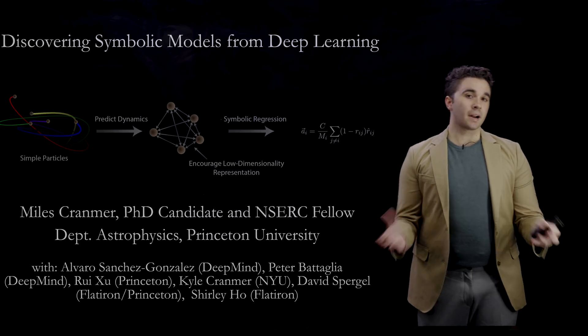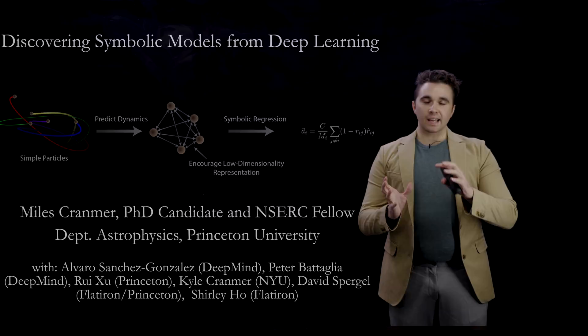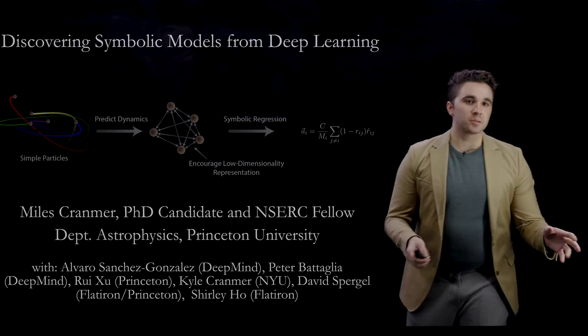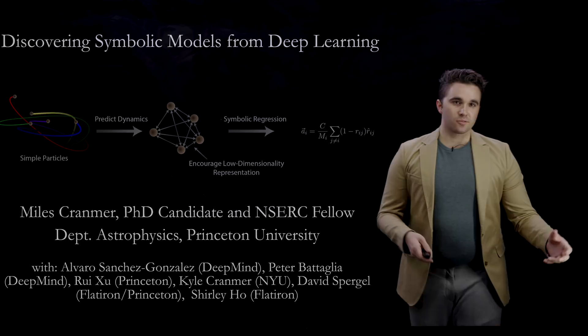My name is Myles Kranmer. I'm a graduate student at Princeton. I work at the intersection of physics and machine learning. I usually apply machine learning to different problems in astrophysics and also develop new methods that might be used for different problems.